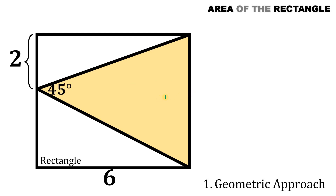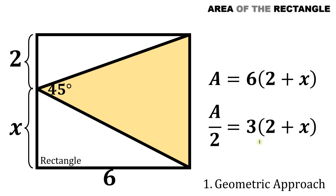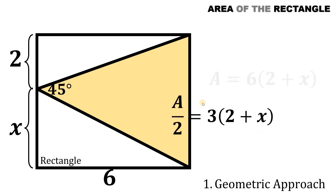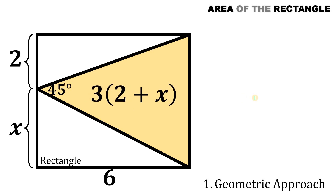First, we will get the area of this rectangle. Let's have this length be equal to x. So the area of this rectangle equals 6 multiplied by (2 + x), which is half of it, equal to 3 multiplied by (2 + x). This value, 3 times (2 + x), is also the area of our triangle. So if we can find another way to express the area of this triangle in terms of x, we can equate them.